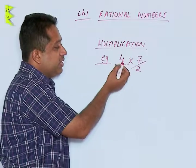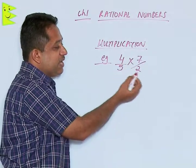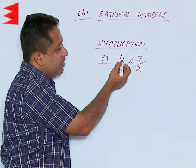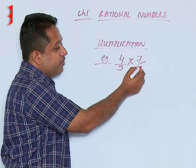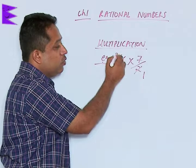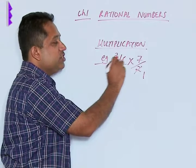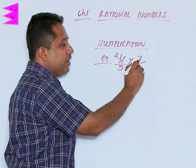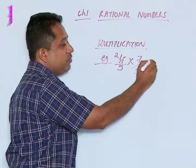We find that there is a 4 and 2 here, so I can cancel—2 times 2 is 4. All we have to do is straight multiplication: numerator is multiplied by numerator. So we get 2 into 7, that's 14, divided by 5 into 1, that's 5.